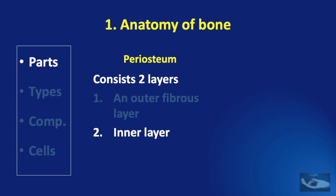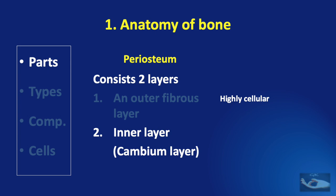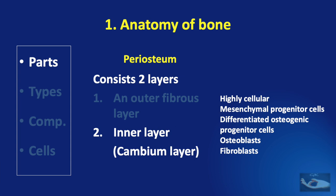The deeper portion of the outer layer is a fibroelastic layer consisting mainly of elastic fibers. The inner layer of the periosteum, otherwise called the cambium layer, is highly cellular and consists of many types of cells like the mesenchymal progenitor cells, differentiated osteogenic progenitor cells, osteoblasts, and fibroblasts in a little collagenous matrix. Thick bundles of collagen fibers called Sharpey's fibers anchor the periosteum to the cortical bone underneath.